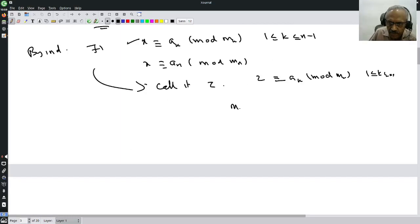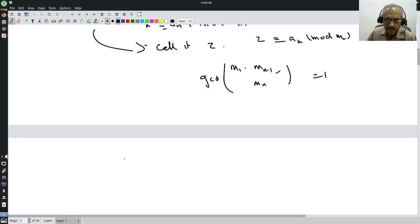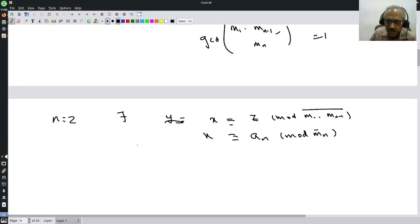Now let us look at these two integers: m1 to mn minus 1 and mn. GCD of this is 1. Therefore, by our n equal to 2 result, there exists x which is congruent to z mod m1 to mn minus 1 and x is congruent to an mod mn. This and these are co-prime and therefore for z and an, this is solvable.